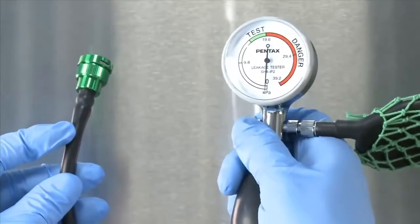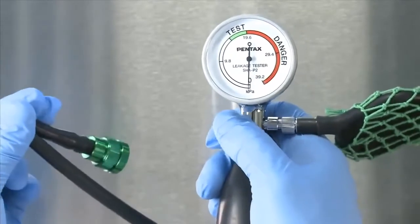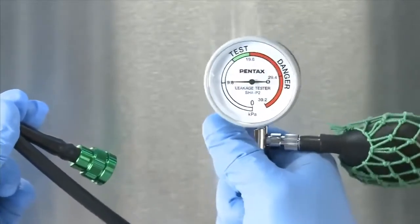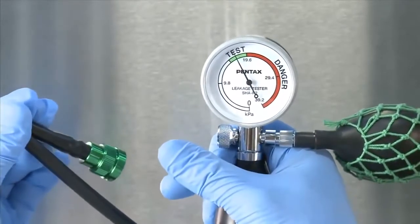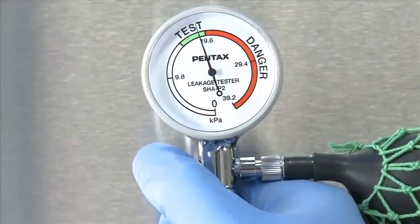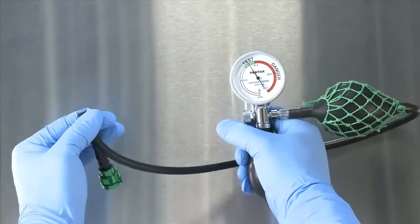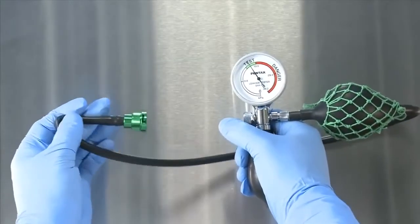Close the pressure relief valve, pinch the tubing and pump the tester into the green zone. If the tube is fully occluded, the leak tester will hold the pressure and the needle will not move. When the tubing is released from a pinched position, the gauge needle should drop.